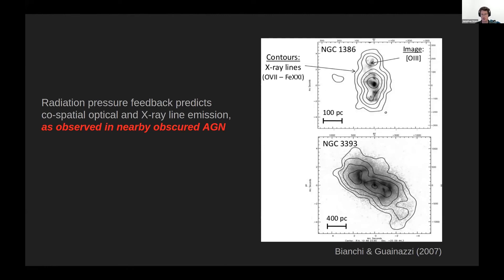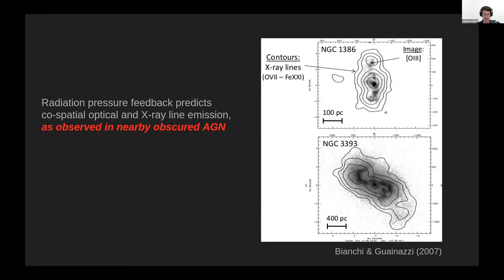This prediction has already been observed. In a paper by Stefano Bianchi from 2007, they measured and mapped the soft X-ray emission around nearby obscured quasars, and showed that the morphology of the soft X-ray emission overlaps that of the [O III] emission. This overlap is consistent with the prediction of radiation-pressure-feedback-dominated clouds — that a single cloud should emit both in the X-ray and in [O III].